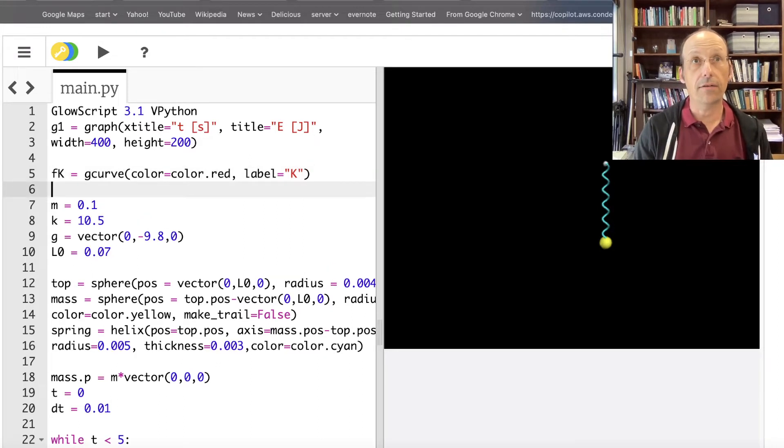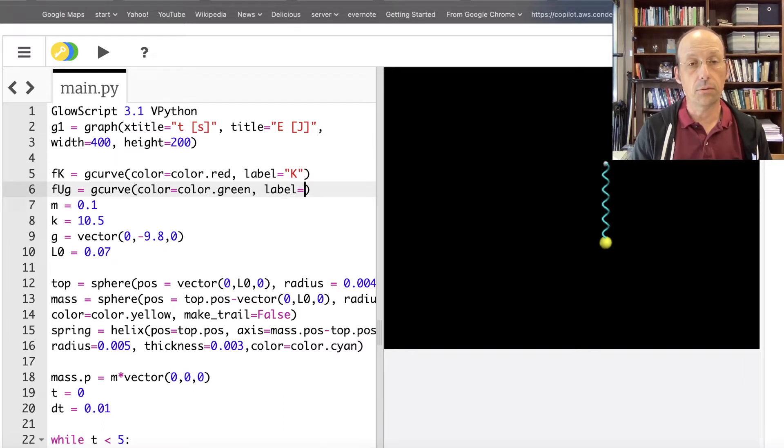I need the gravitational potential energy. So let's call it FUG equals G-curve. And what color is gravity? It's a trick question. The answer is green. Color equals color dot green. Label equals UG. I'll just put it as UG.